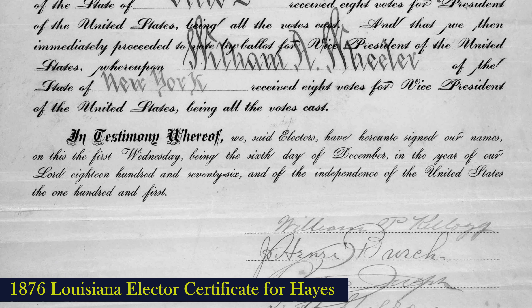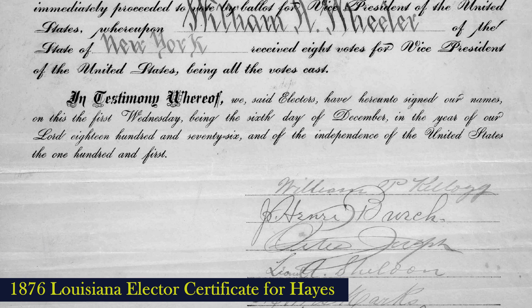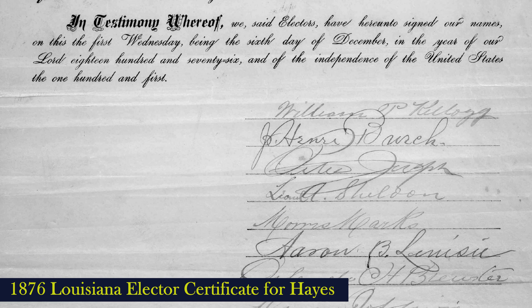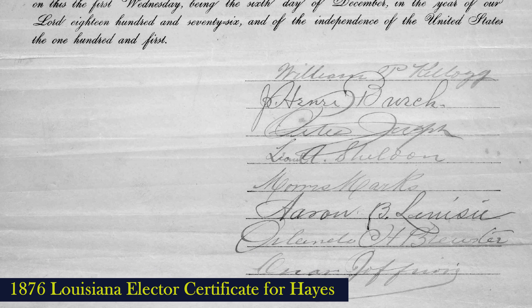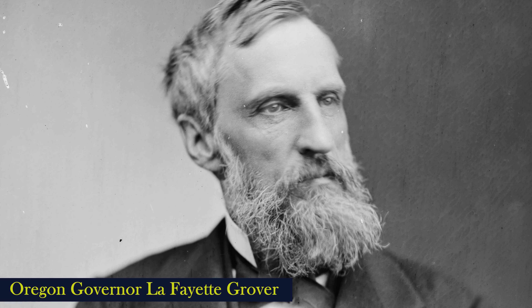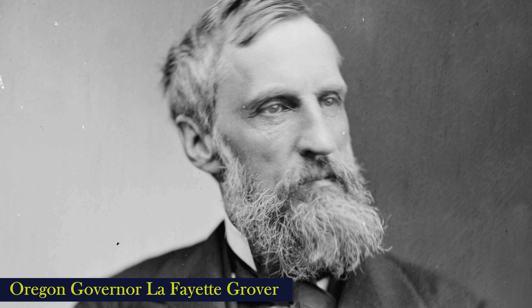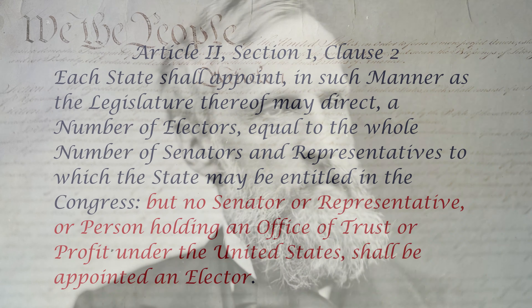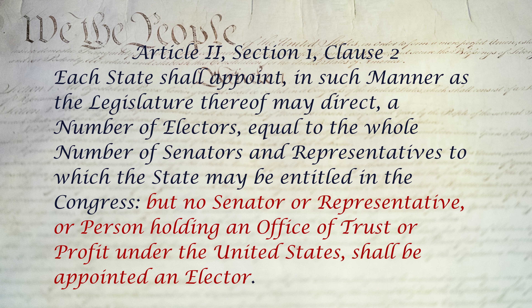But the Democrats had a plan. They would name their own electors and submit them. The Republican governor of Florida signed the official certificate for the state's four electoral votes. The Democratic certificate was signed by the state's attorney general and the Democratic governor-elect. In Louisiana, the official certificate for the state's eight electoral votes was also signed by the Republican governor. The Democratic gubernatorial candidate also signed a certificate. The certificate from South Carolina was not signed at all. According to the Tilden electors, the certificate for their seven electoral votes was automatically tied to the popular vote, which they claimed they had won, but which were rejected by the Republican-controlled state election board.